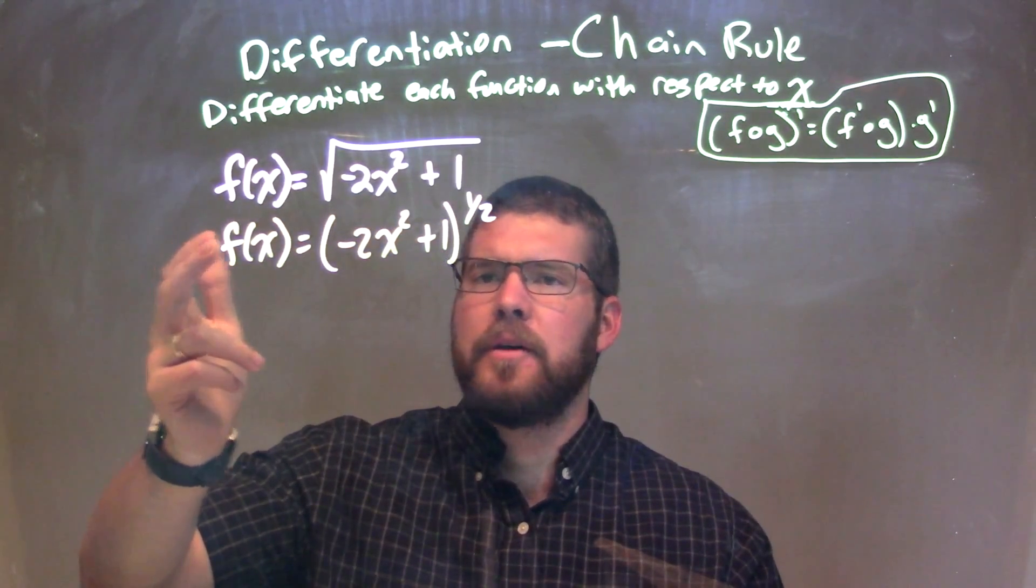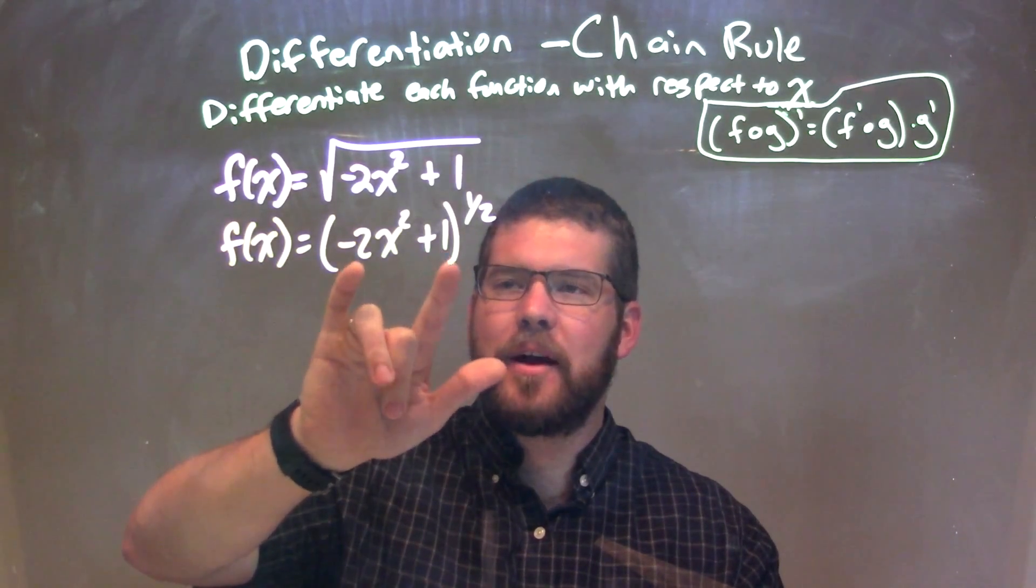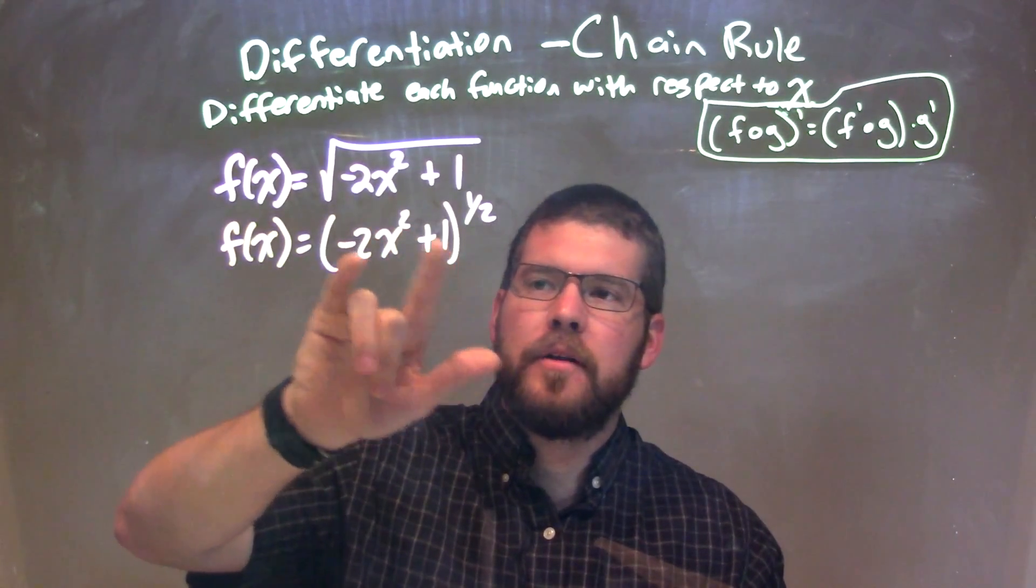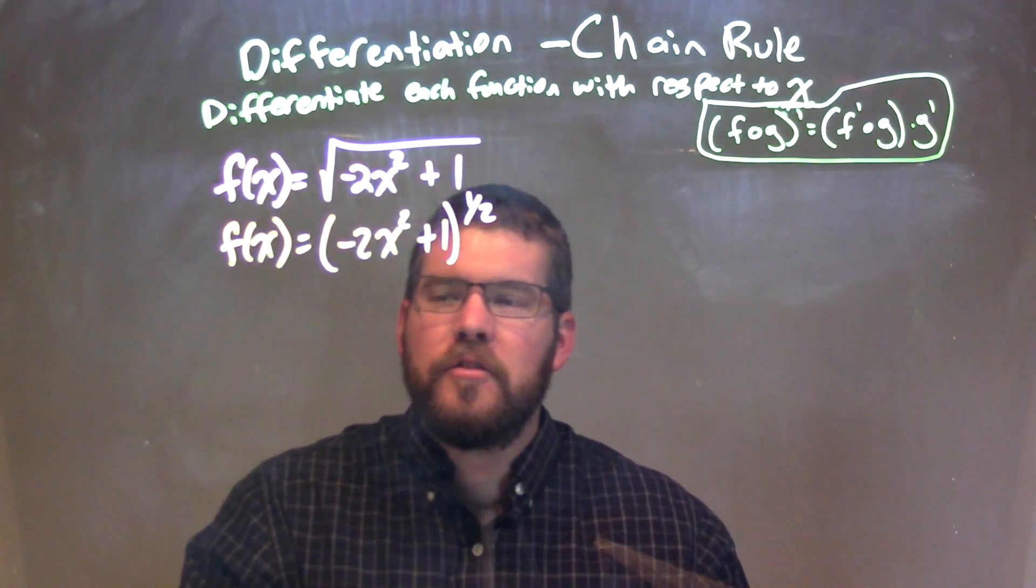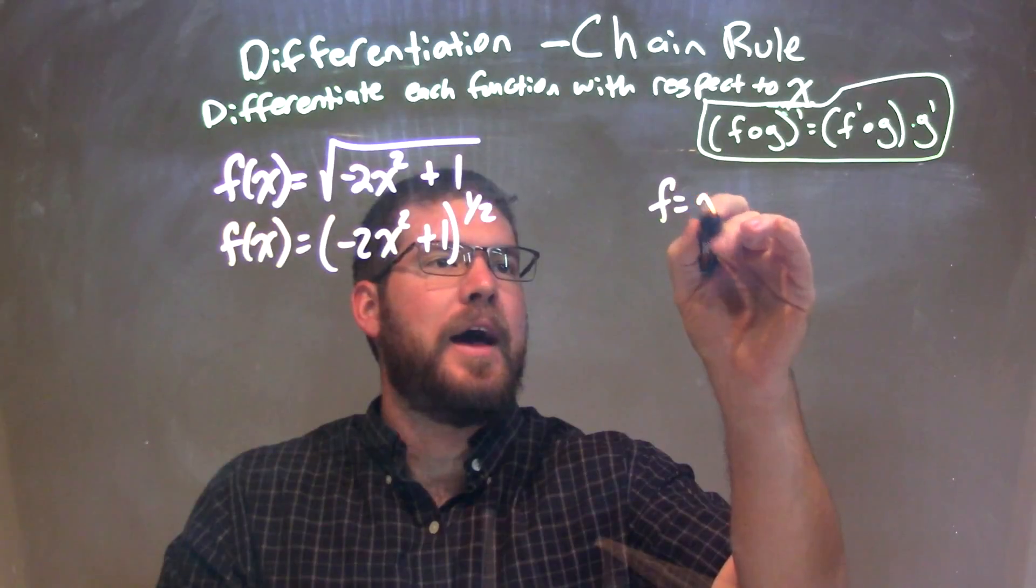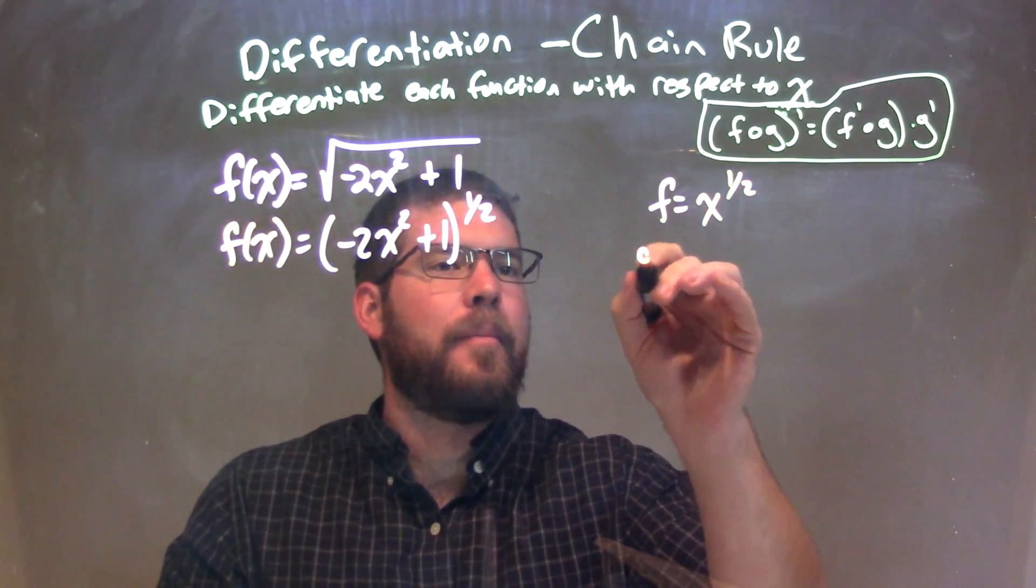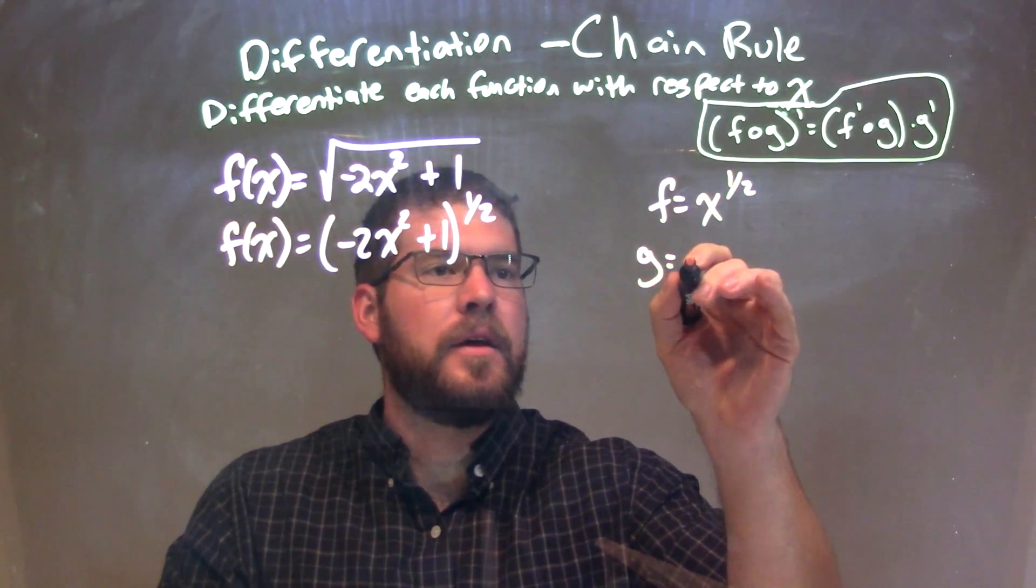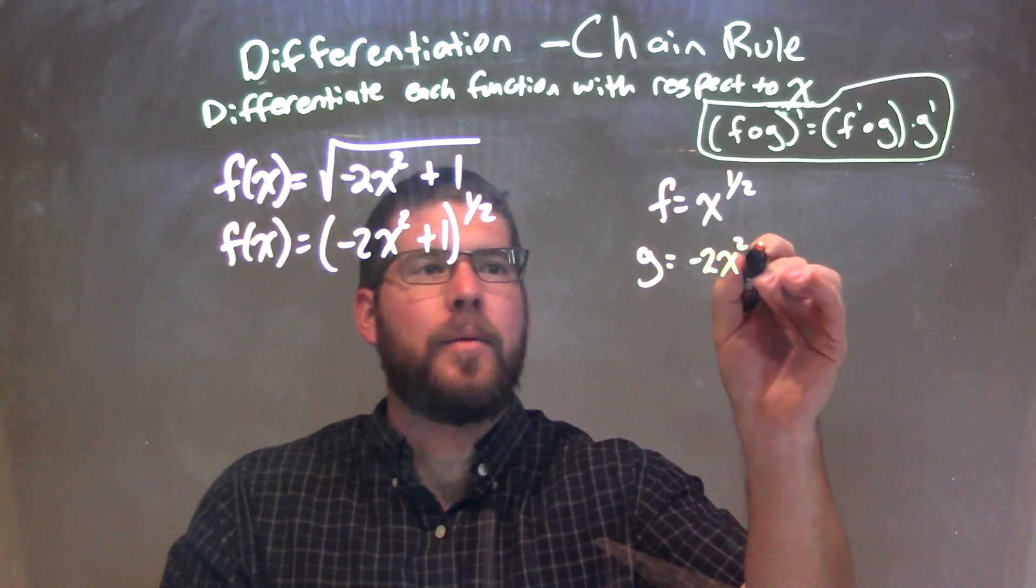So now I have my function. I can see it has two parts in the parentheses and in the exponent. So I'm going to see if I can write this as an f of g function. If my f is x to the 1 half power, my g would be what's inside the parentheses at negative 2x squared plus 1.